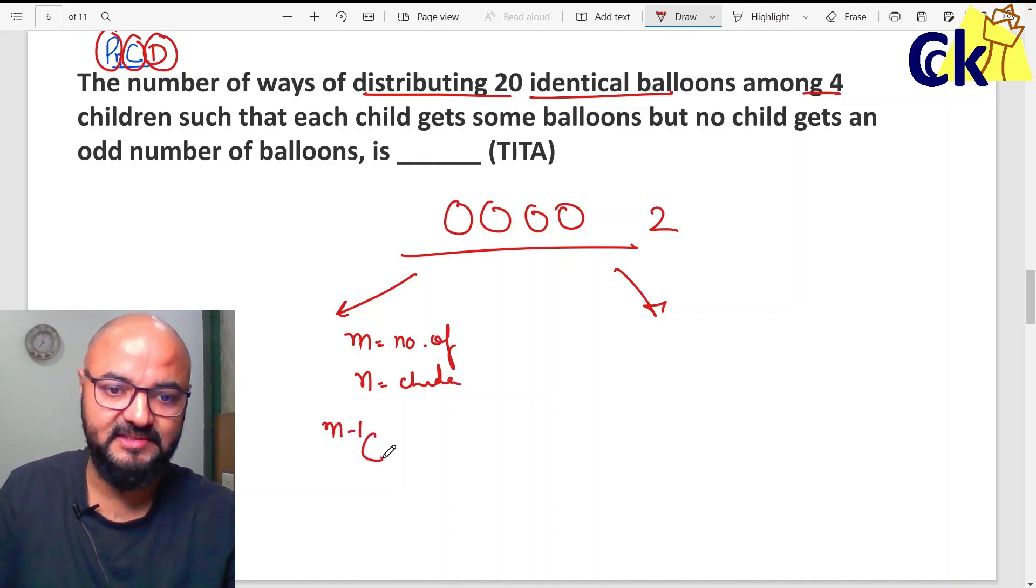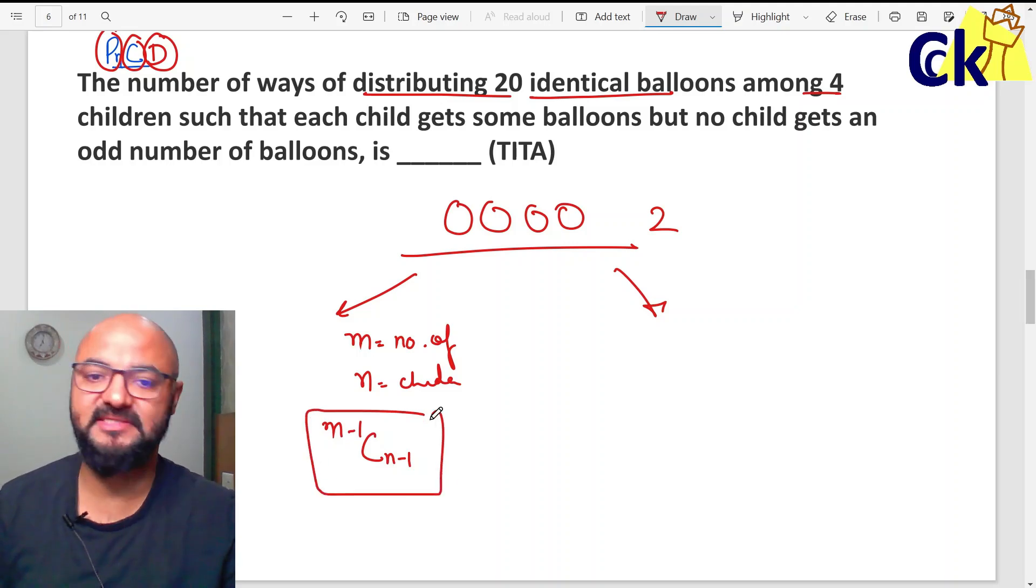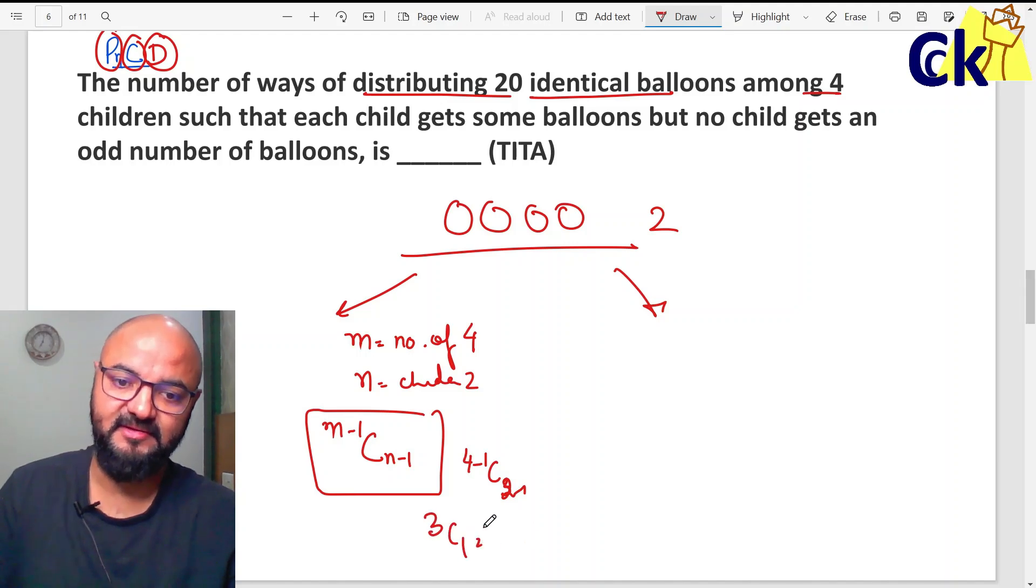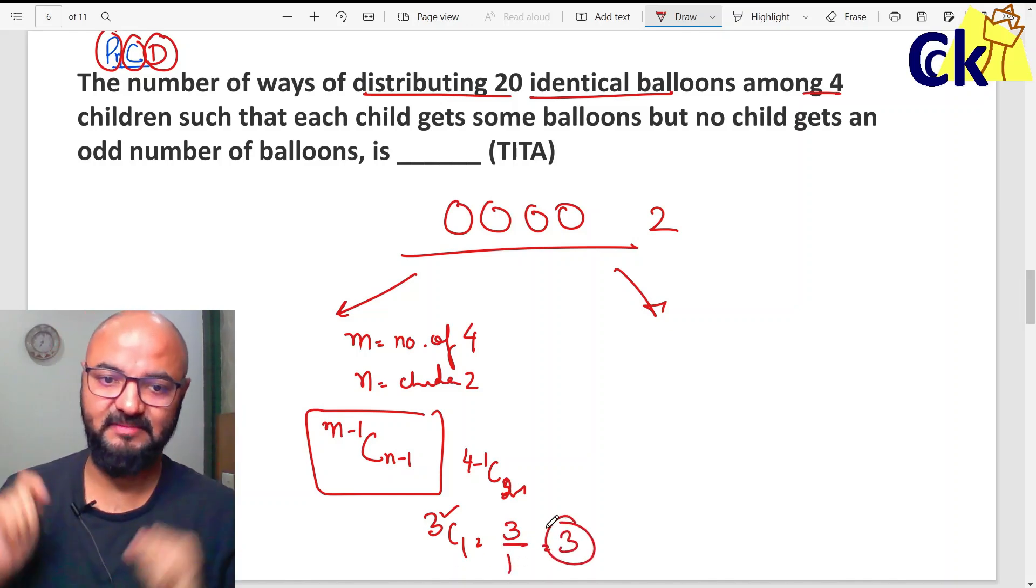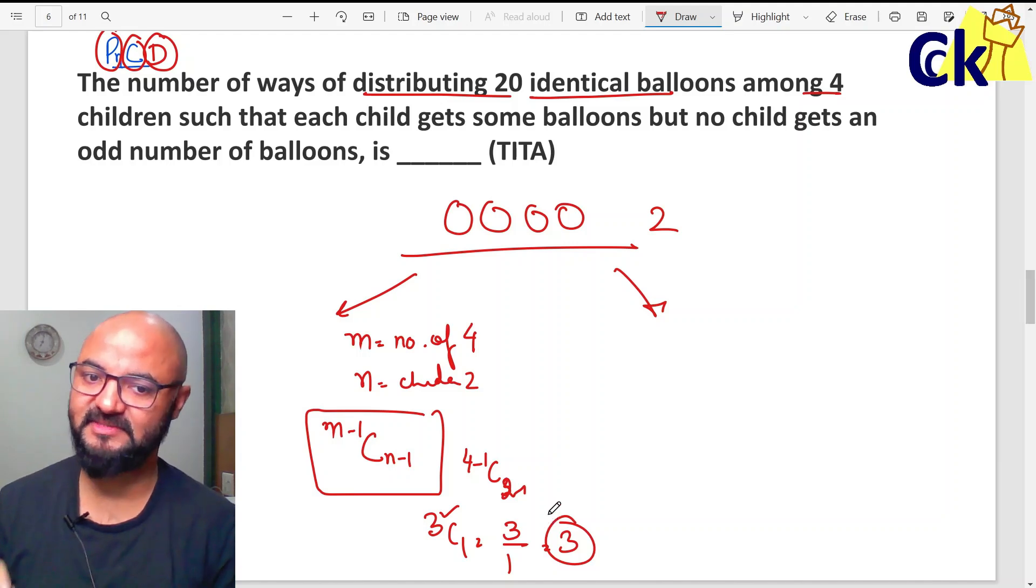Formula is very simple: M minus 1, C N minus 1. Number of chocolates are 4, number of children 2. So 4 minus 1 and then 2 minus 1. So 3C1. That's it. This is a calculation, 3 ko ek baar likha and 1 ko ek baar likha. 3. Game over.